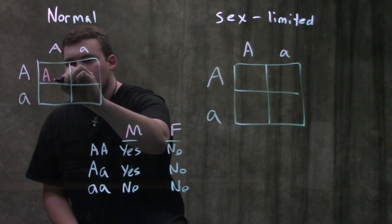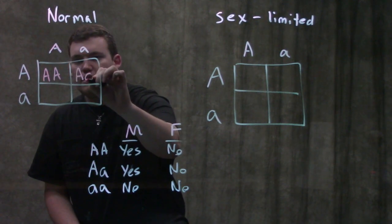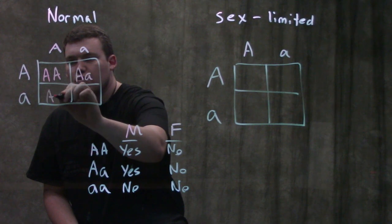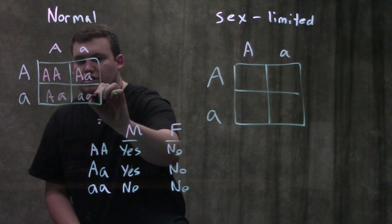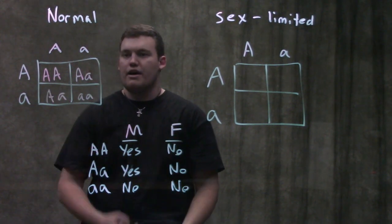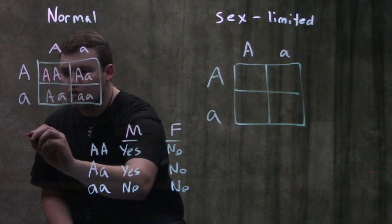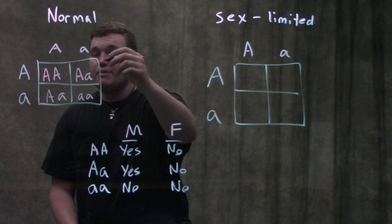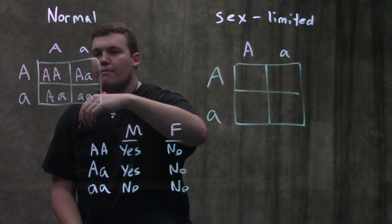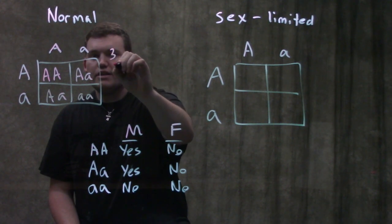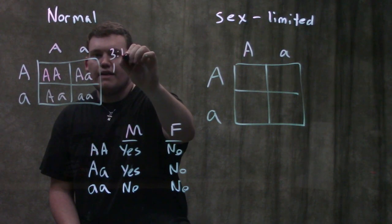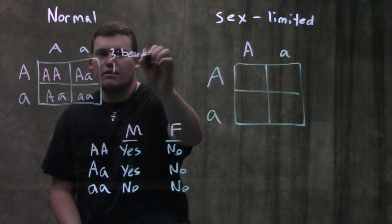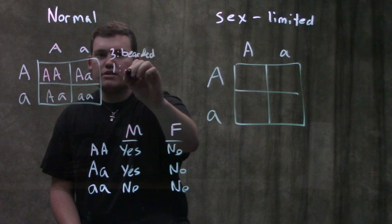So first we're going to do normal. And I'm going to fill in my Punnett square just like normal here. And what we're going to get, just like you guys would expect by now with a heterozygote being crossed with a heterozygote, is a 1 to 2 to 1. So what that means is we're going to have, because it's a dominant allele, 3 to 1, and that 3 is going to be bearded, and the 1 is non.